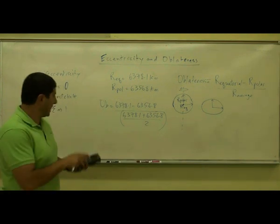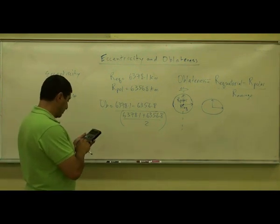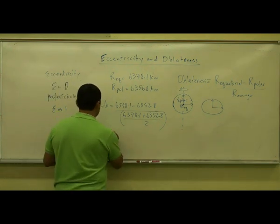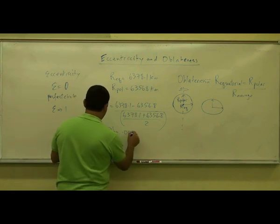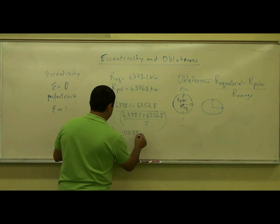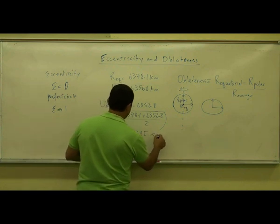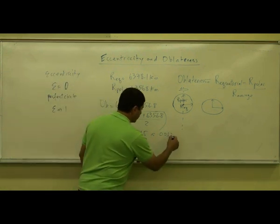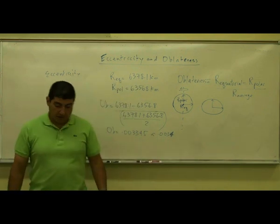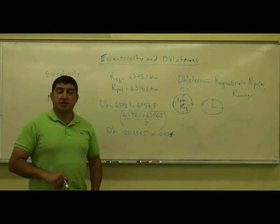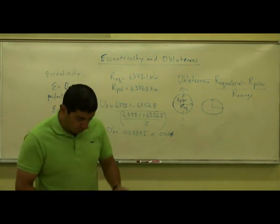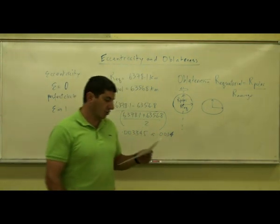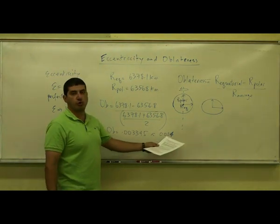When we calculate that, we get 0.003345, which is approximately 0.003 — roughly about 0.0033 or 0.0034. If you look at data books for the oblateness of planets, you will see that the oblateness of the Earth is not one of the most oblate, but it's not the most spherical either.